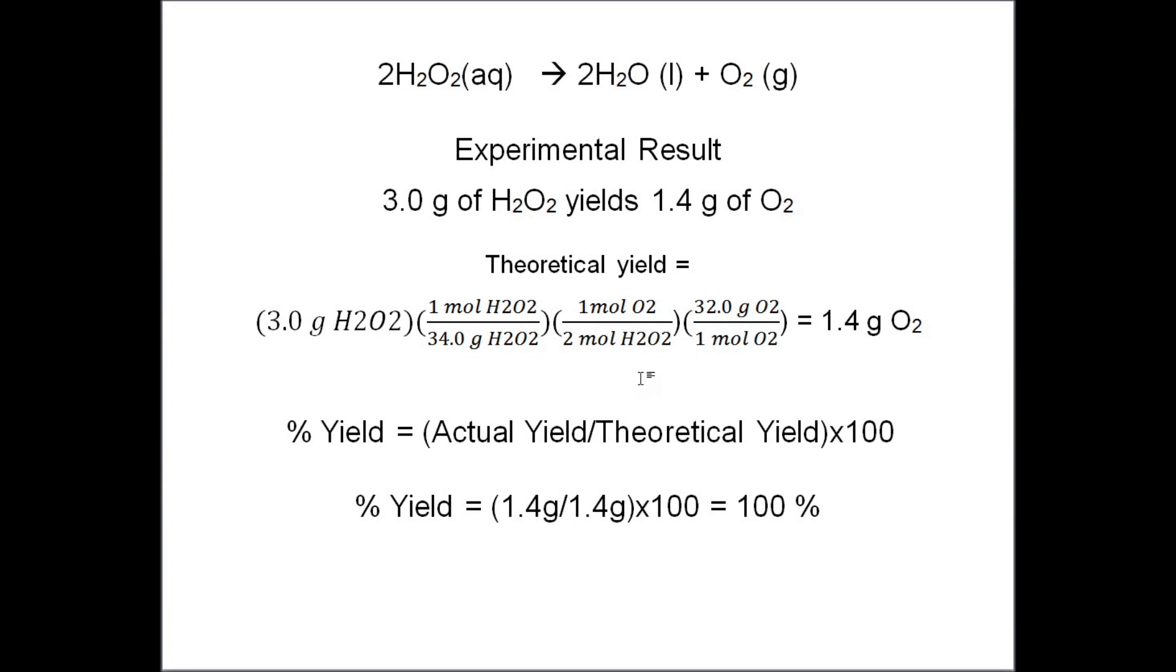And then we convert that to moles of oxygen expected, which would be 1 mole of oxygen for every 2 moles of H2O2. So that's our stoichiometric ratio. And finally we convert the moles of oxygen to grams by multiplying by the molar mass, 32 grams per mole, and that gives us 1.4 grams of oxygen.